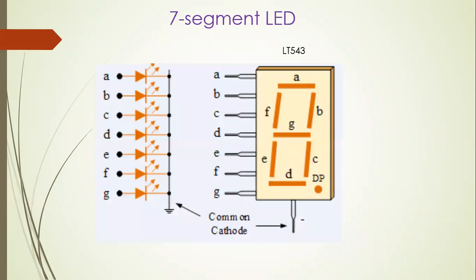Now, what is a 7-segment LED? A 7-segment LED consists of LEDs arranged in a rectangular fashion as shown in this figure. These displays are usually available in the form of IC LT543. LT543 is a 10-pin IC which consists of 8 LEDs, one pin for ground, and the other pin for enable. These ICs are available in two configurations: one is the common cathode configuration and the other is the common anode configuration.